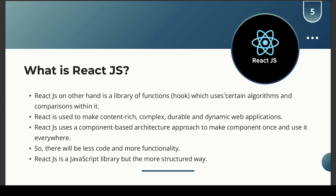React.js on the other hand is a library of functions called hooks, which uses certain algorithms and comparisons within it. It is used to make content-rich, complex, durable, and dynamic web applications. Content-rich means you can embed content for websites like web pages and landing pages. Complex means the complexity can go further manifold, with multiple pages and states being handled. Durable means React.js projects are robust and require less code. Dynamic means it can handle real-time data too.